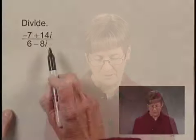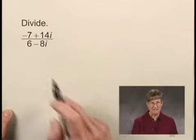We're going to divide complex numbers. We have negative 7 plus 14i over 6 minus 8i.